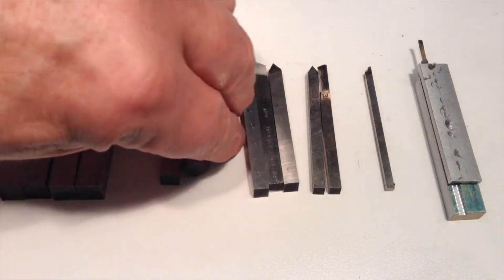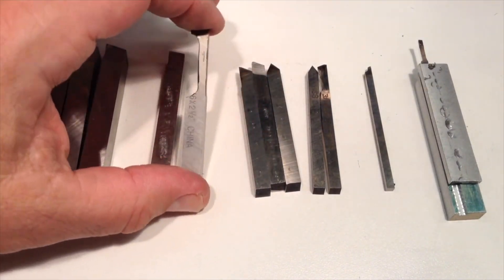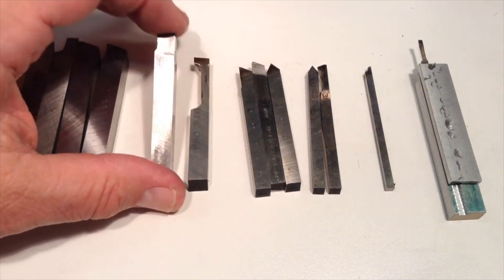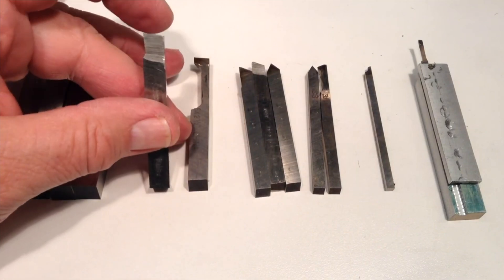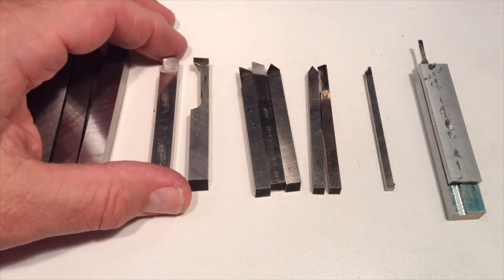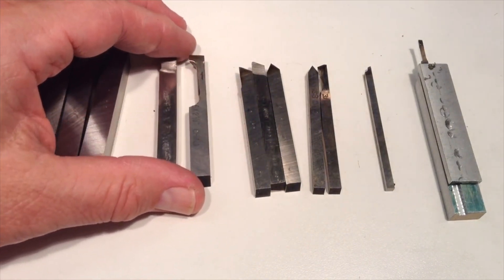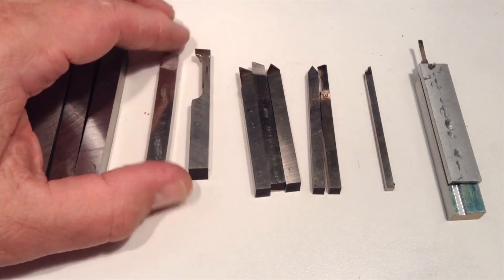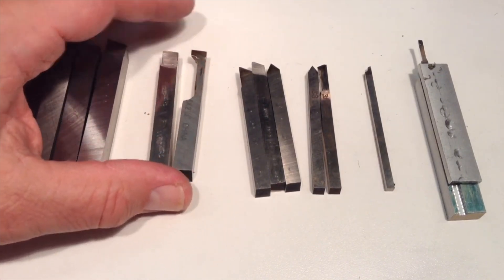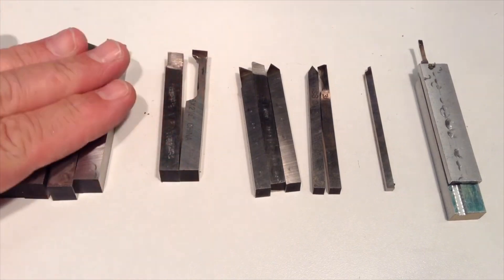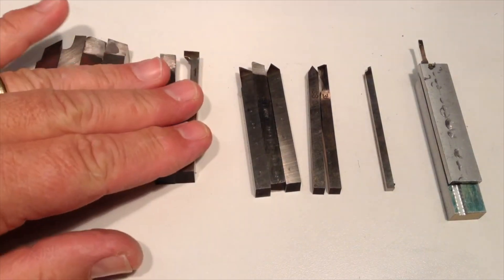Now these next size down are 5/16 inch cross-section, and they serve the same purpose, but because the tool bit is a little bit smaller, they can be ground more quickly and more easily on a typical shop grinder. And so I often prefer to use these smaller size tools rather than the 3⅛. I do a lot of mine on 5/16.